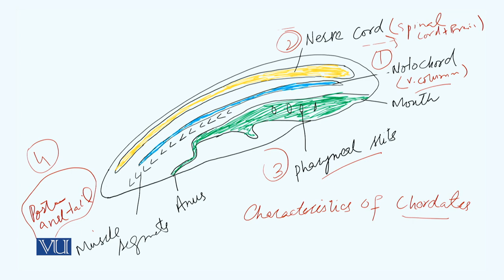And the post-anal tail, which sometimes exists in the embryonic stage, like in humans. So these are the four characteristics of chordates: nerve chord, notochord, pharyngeal slits and post-anal tail.